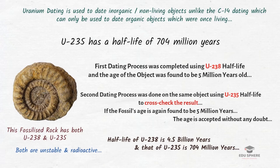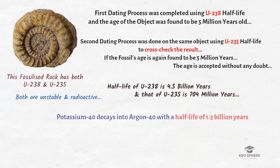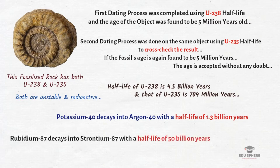Uranium is not the only isotope that can be used to date rocks — there are additional radiometric dating methods based on different isotopes. For example, in potassium-argon dating, we can tell the age of materials containing potassium because potassium-40 decays into argon-40 with a half-life of 1.3 billion years. Similarly, with rubidium-strontium dating, rubidium-87 decays into strontium-87 with a half-life of 50 billion years.